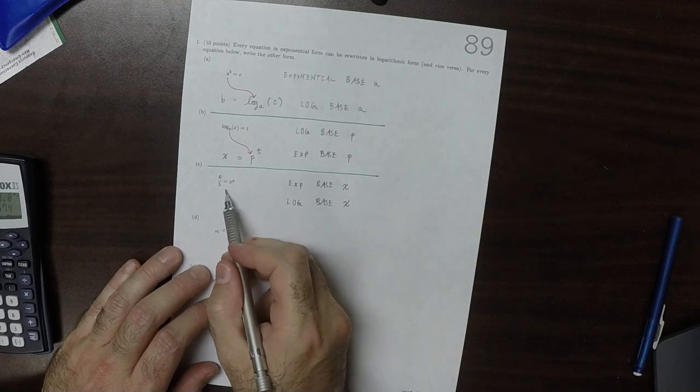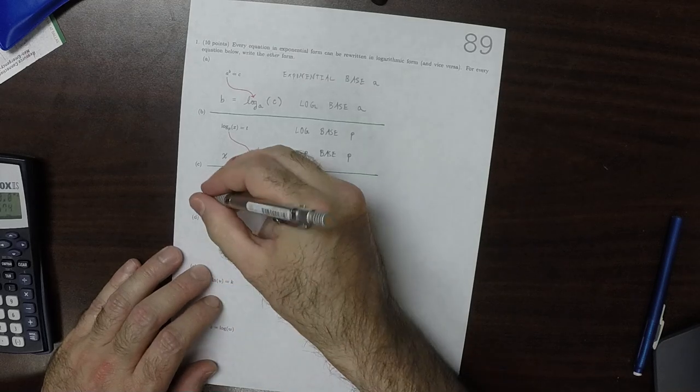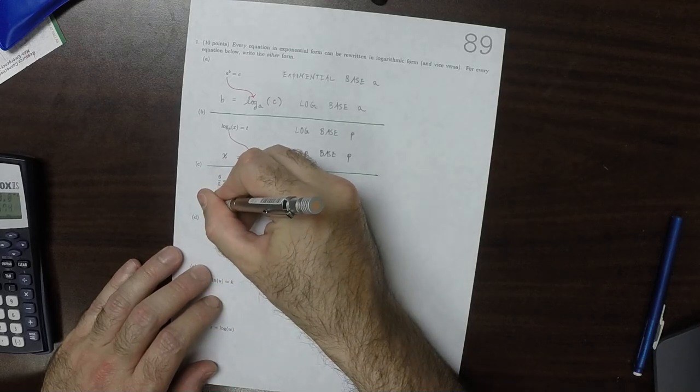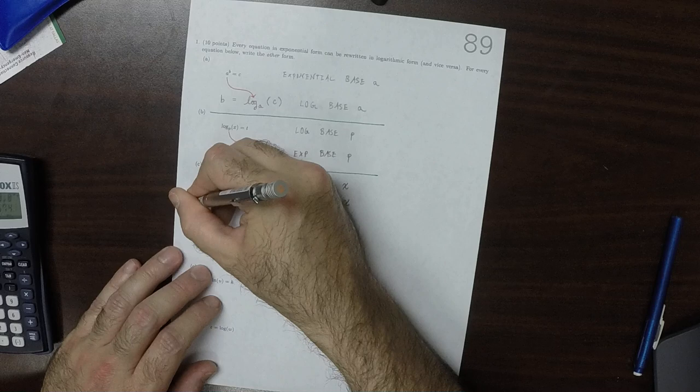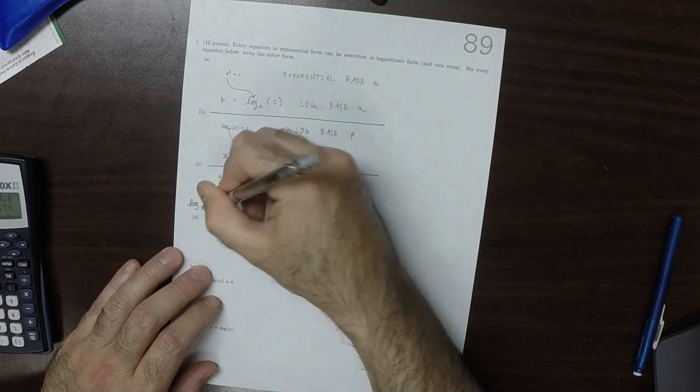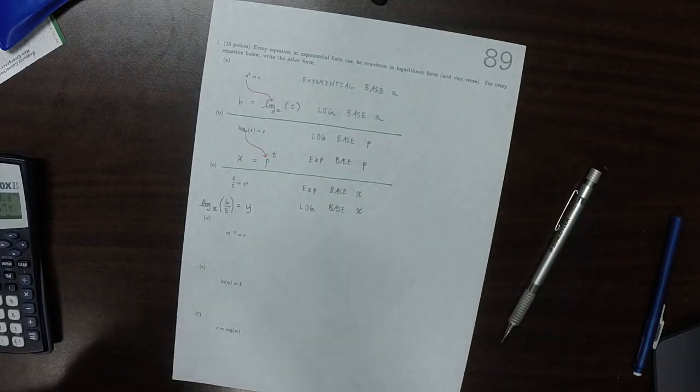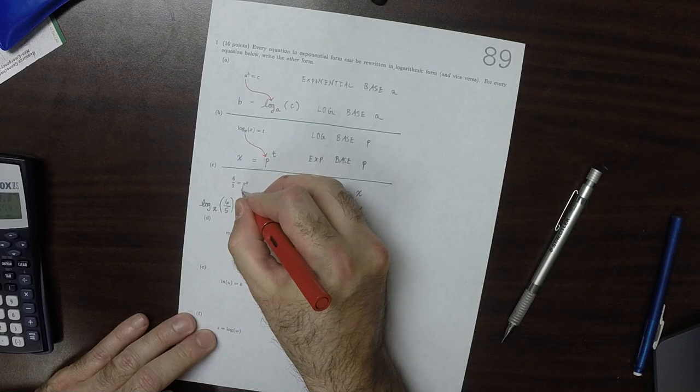So that means that the base is going to switch sides. So the 6 fifths is still going to be on its side. But now it's going to be logarithm base X of 6 fifths is Y. Which is to say that the base X switched sides.